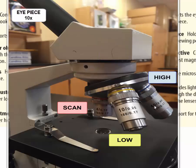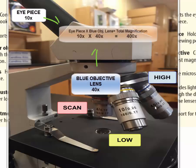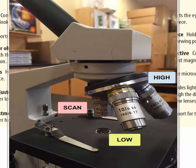The high power lens has a 40 marked on it so this is 40 power and when you multiply it by the 10 power of the eyepiece this gives you 400 power in total magnification. So these are our three objective lenses and these are the magnifications that they have.